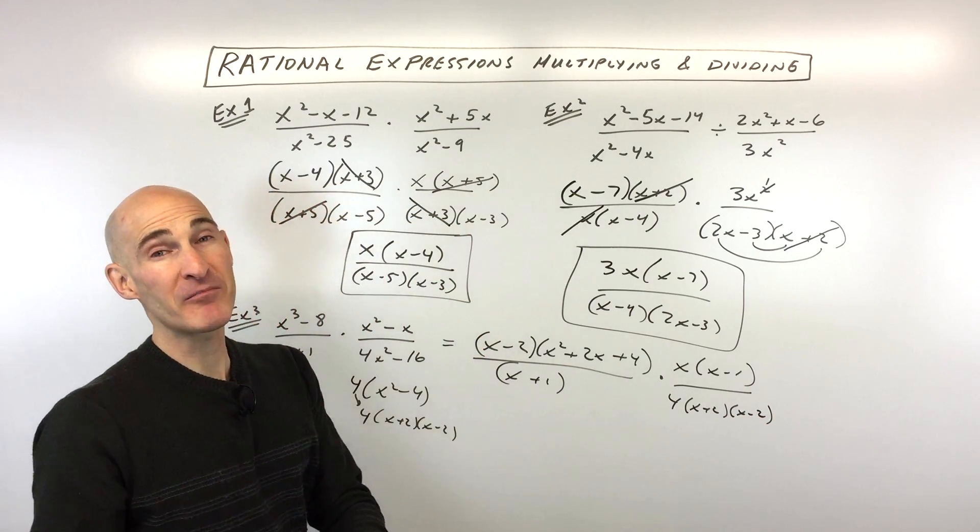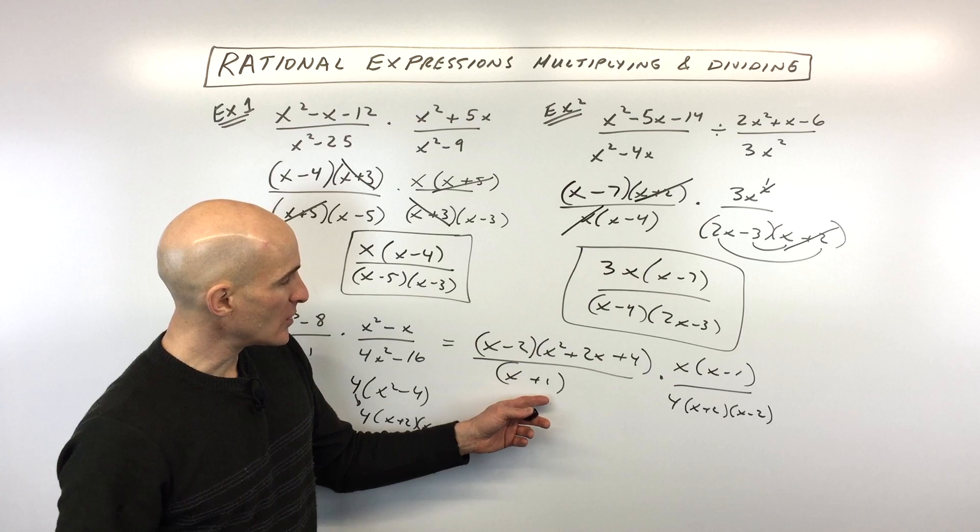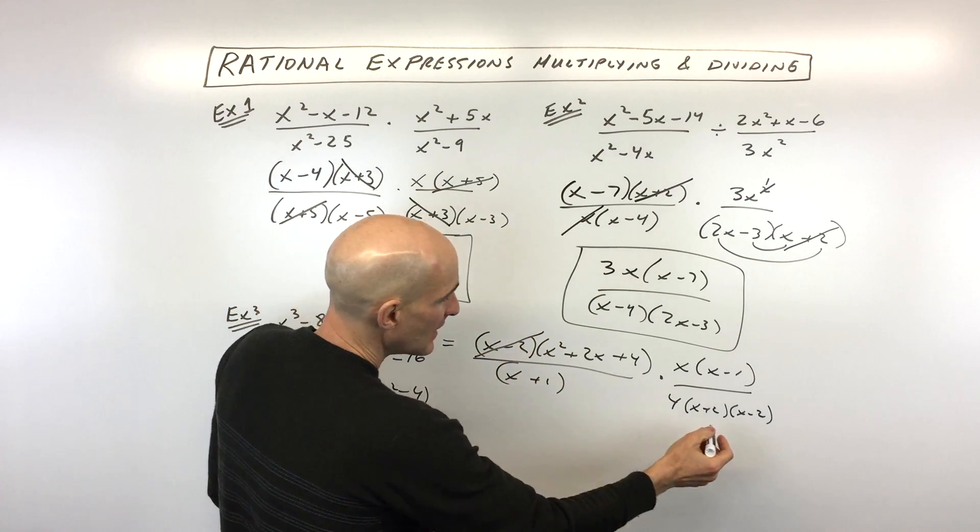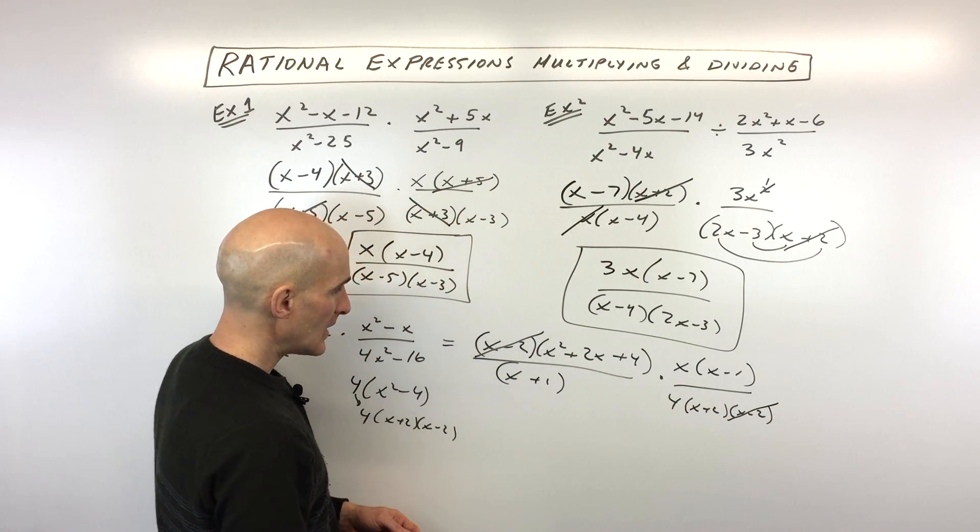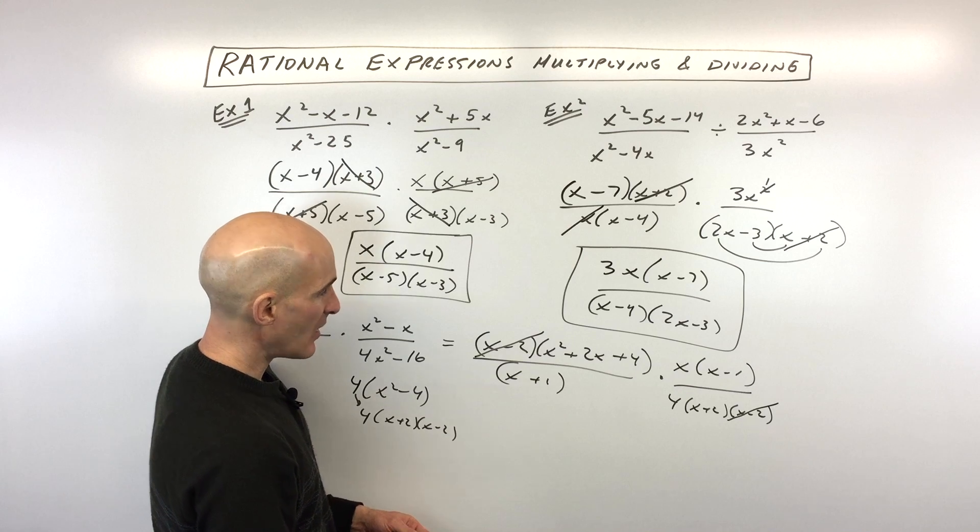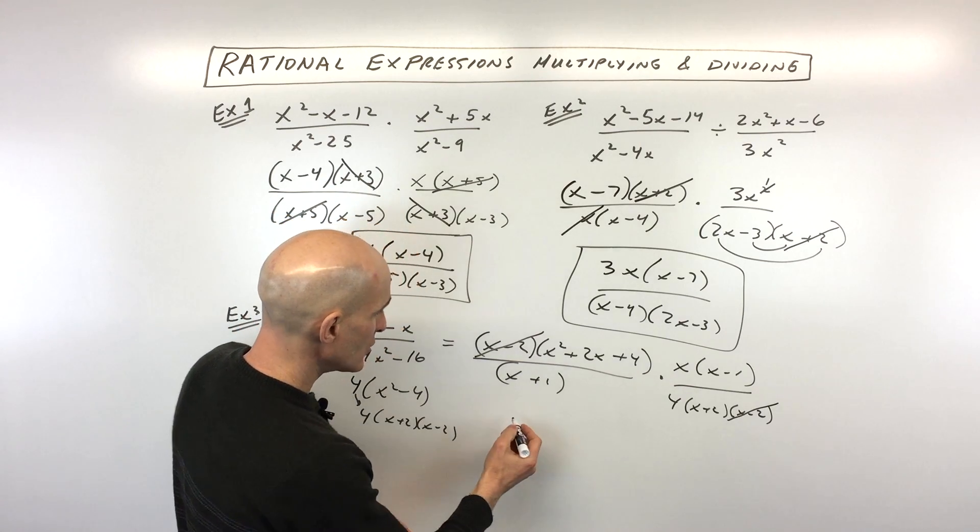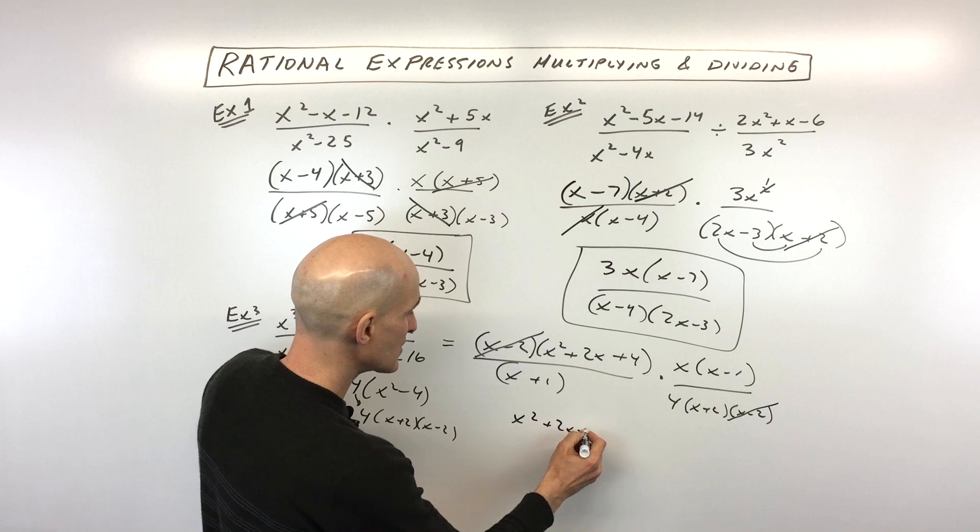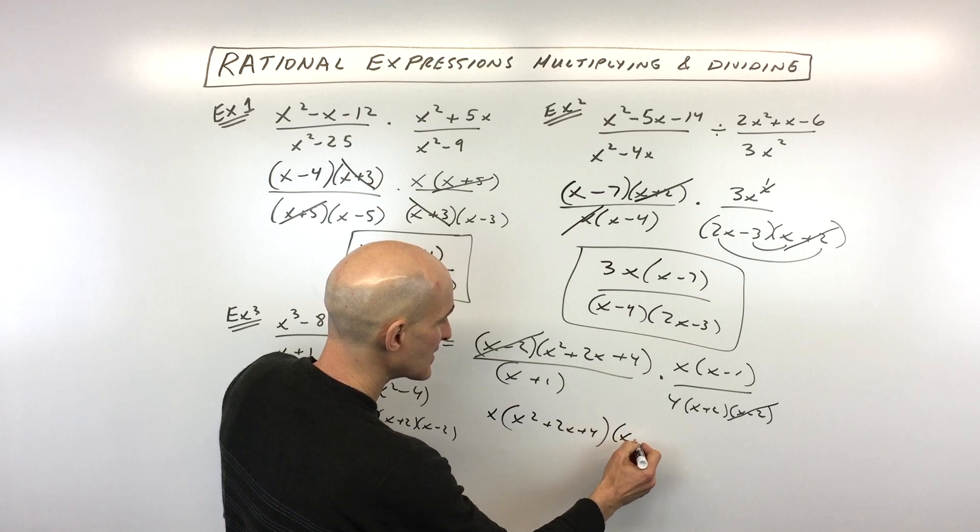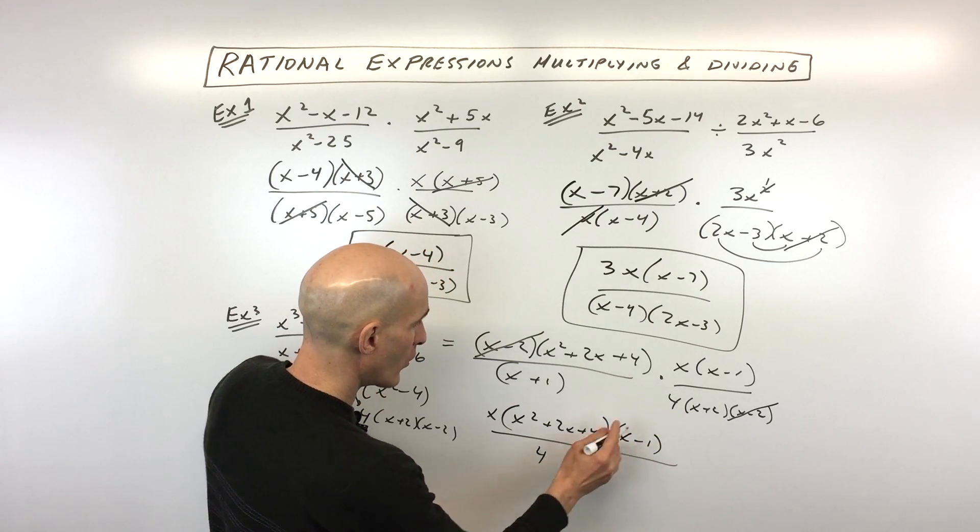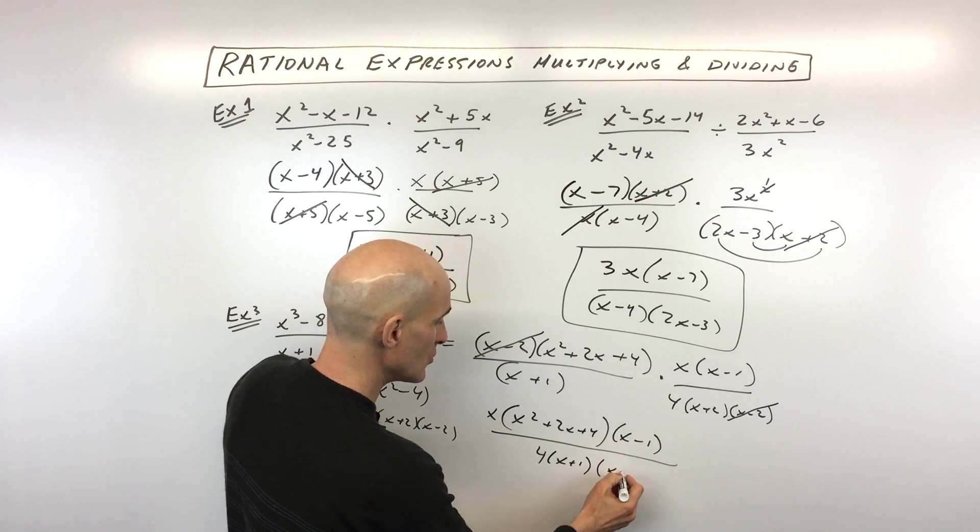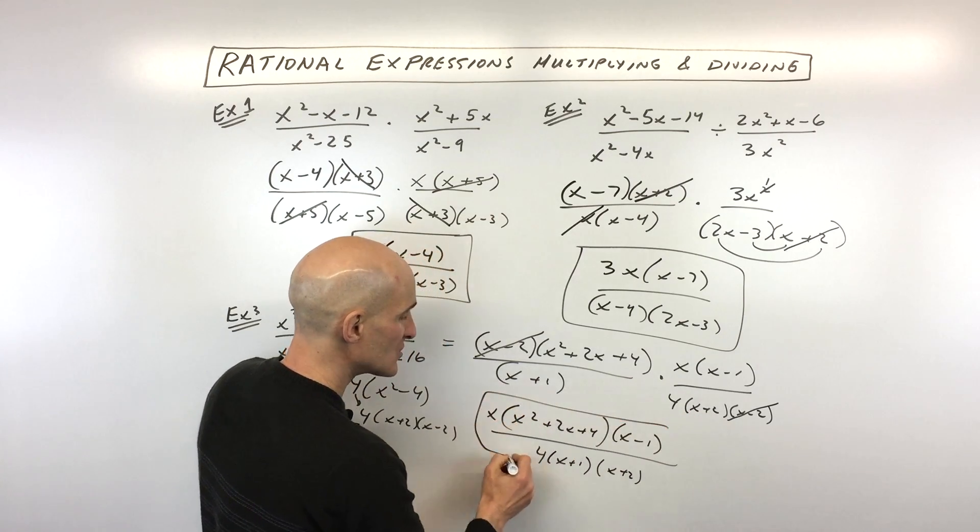So that was the tough part, really. So now this is the easy part and kind of the fun part. We can reduce top and bottom. So we've got x minus 2 cancels with x minus 2. And what else do we have? Anything else? That's about it. So that's all we can really do. So in this case, we just have x squared plus 2x plus 4 times x. I'll put the x in front here and then x minus 1. And then this is all over 4 times x plus 1 and x plus 2. So this one really didn't reduce down too much.